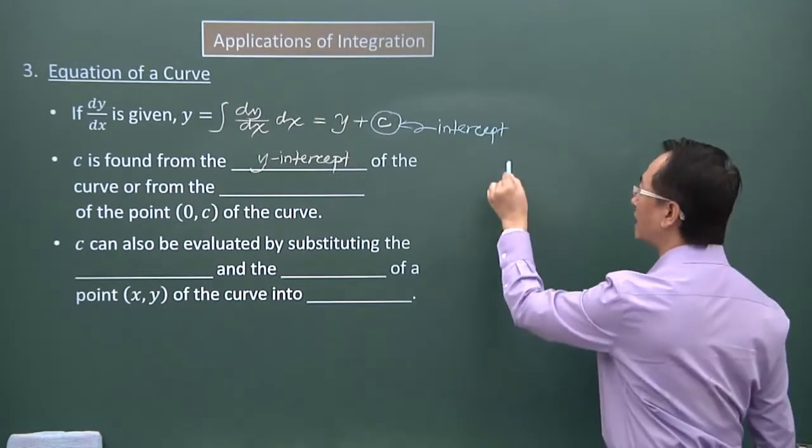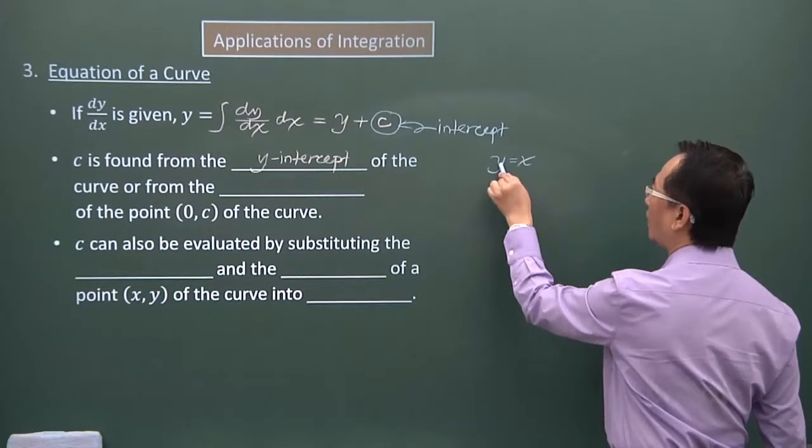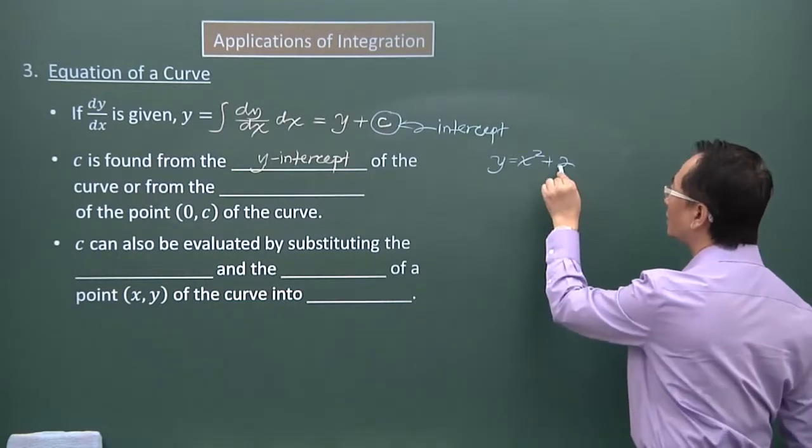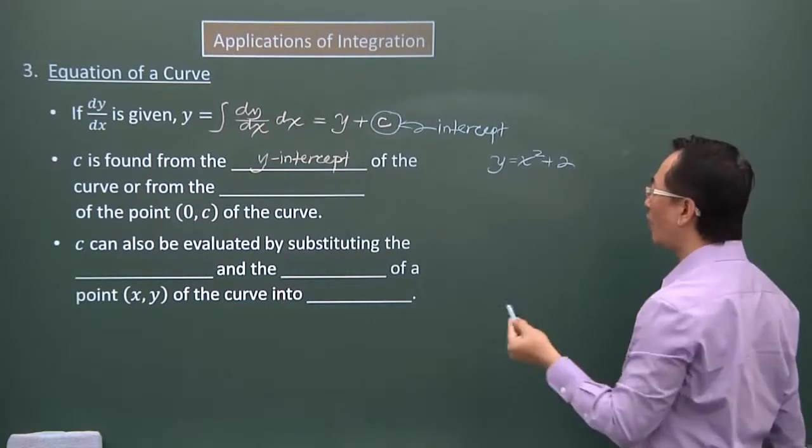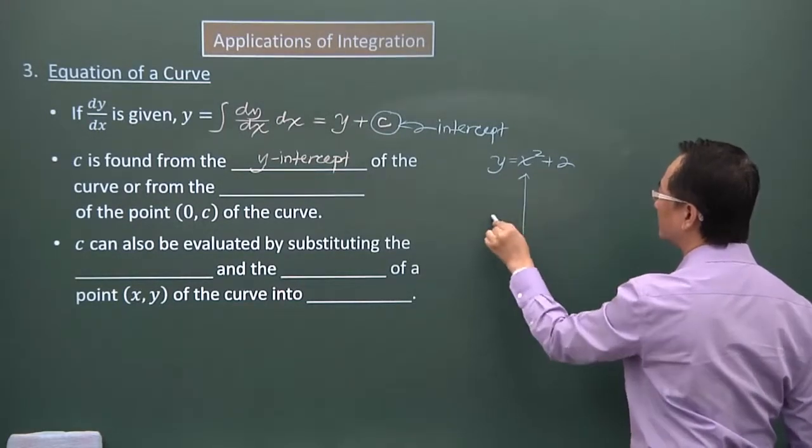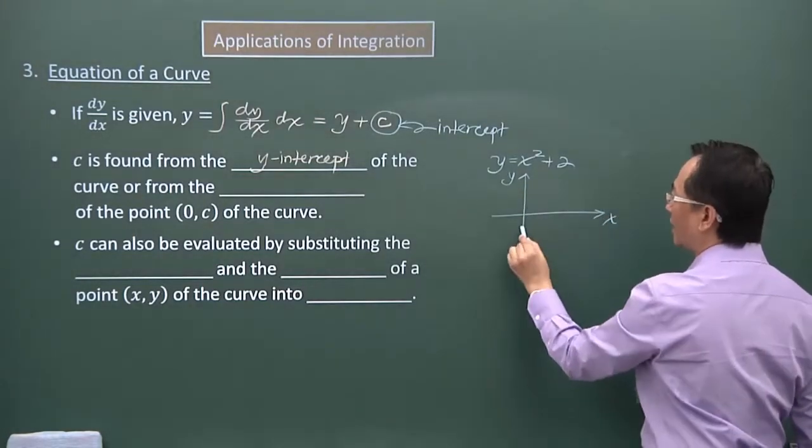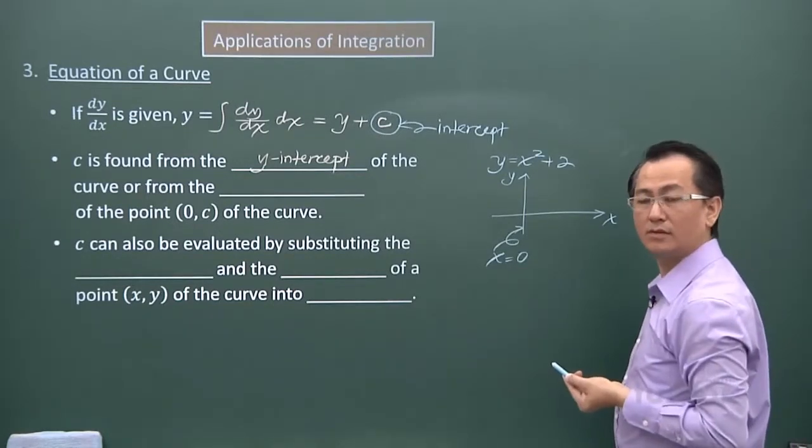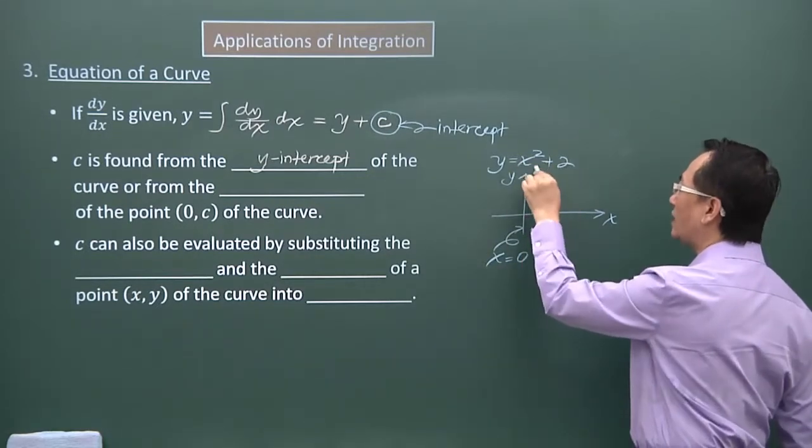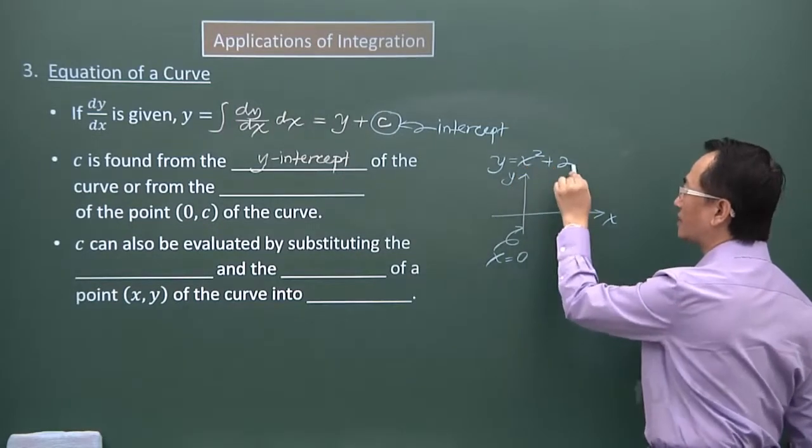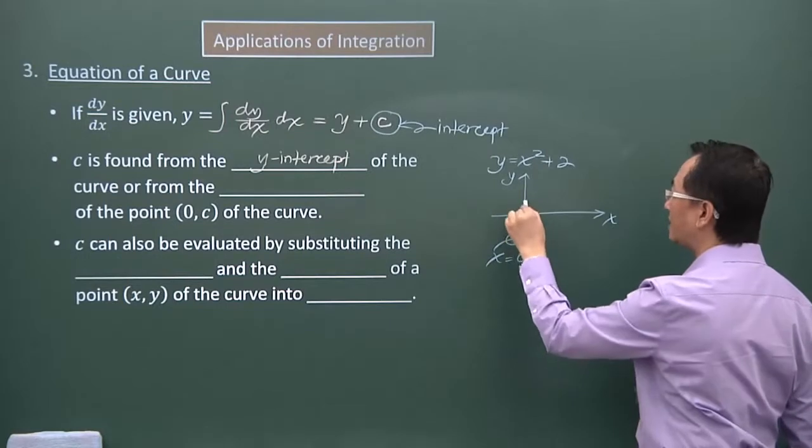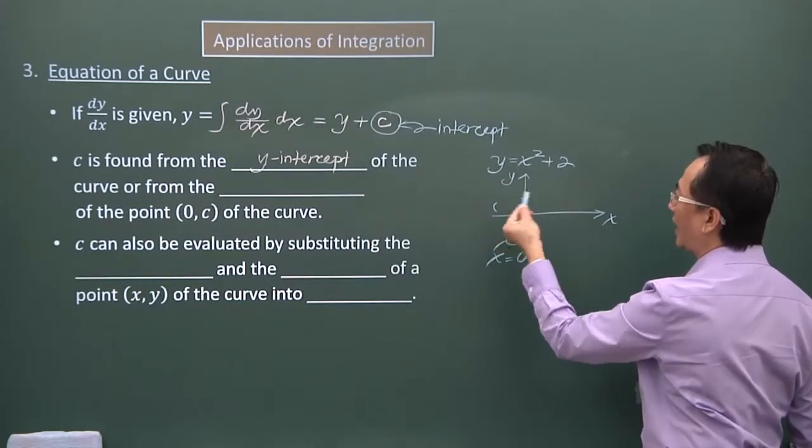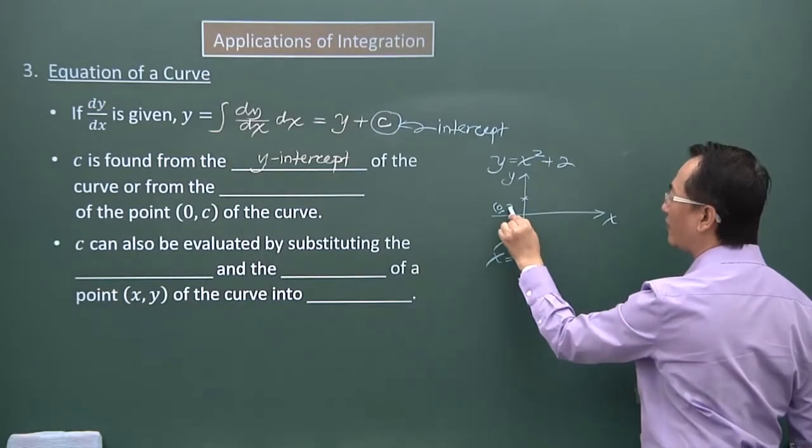So if I give you some example, let's say y equals x squared plus 2. Then 2 is the y-intercept. What it means is, you can see, along the y-axis, the value of x is 0. So if I put the value of 0 into the equation, 0 squared here plus 2, I get a 2. What it means is, the curve will have to cut through here.